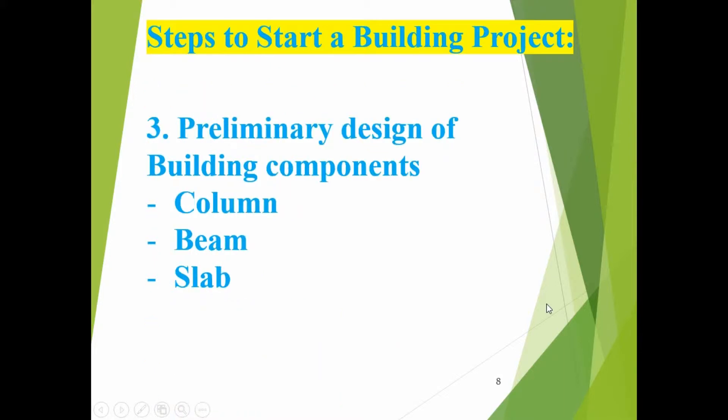The third step is the preliminary design of building components. Building components include column, beam, and slab. Preliminary design means determining the size of the column, size of the beam, and size of the slab. Generally, slab thickness is taken as 4 to 5 inches. Beam size means the width and depth of the beam, and column size means the width and depth of the column.